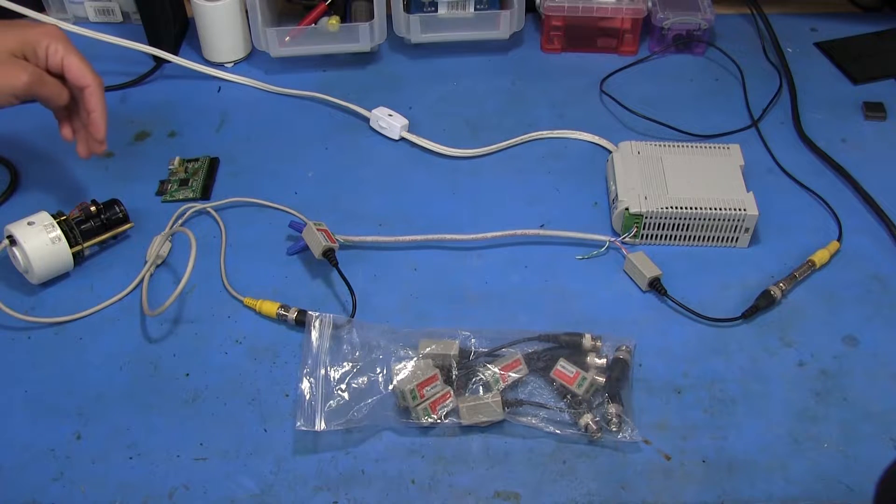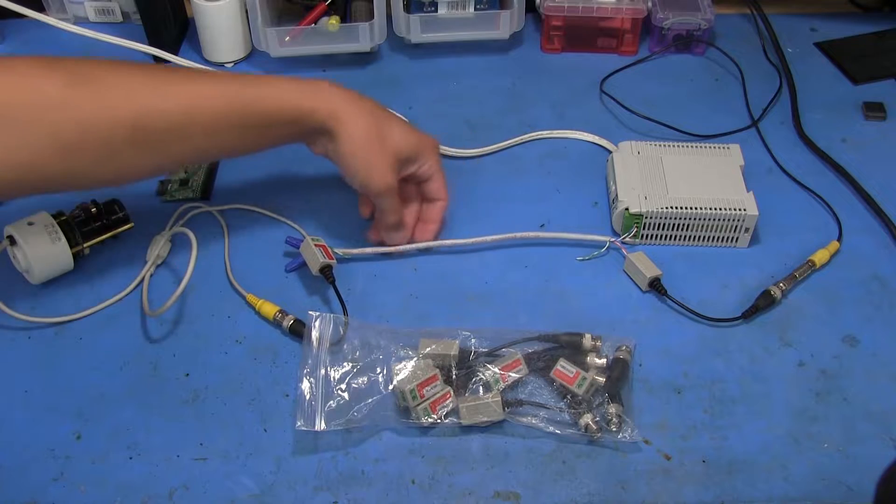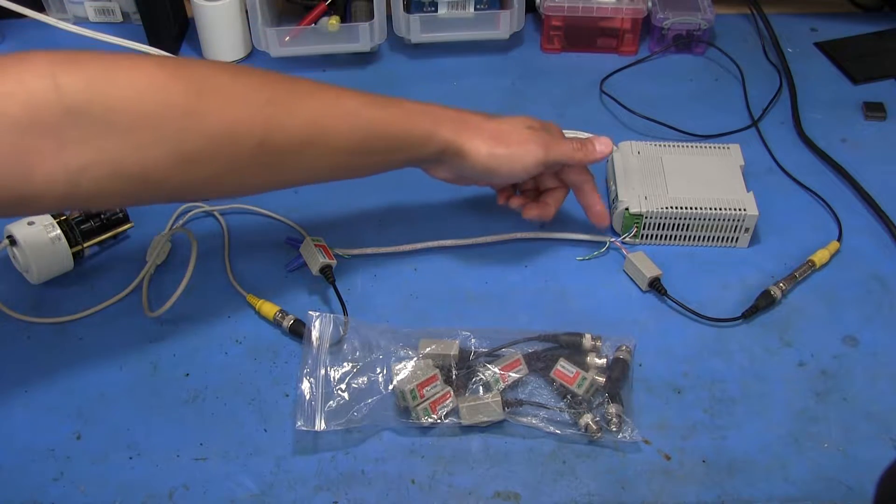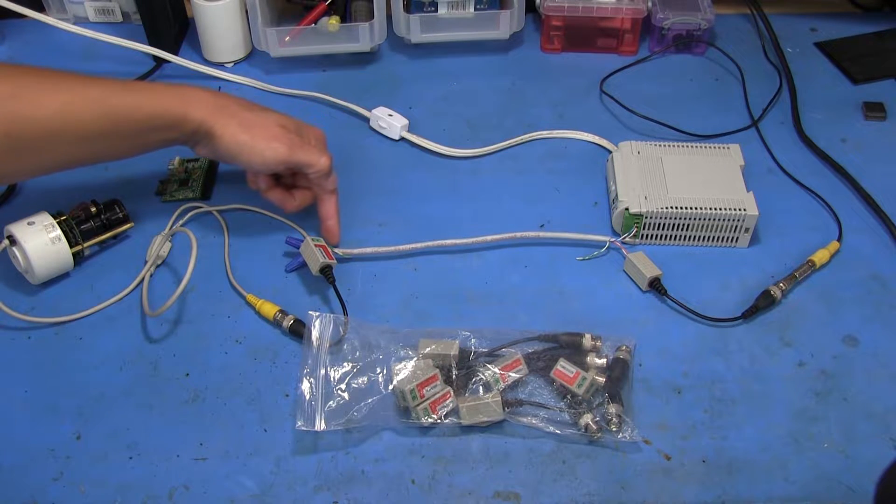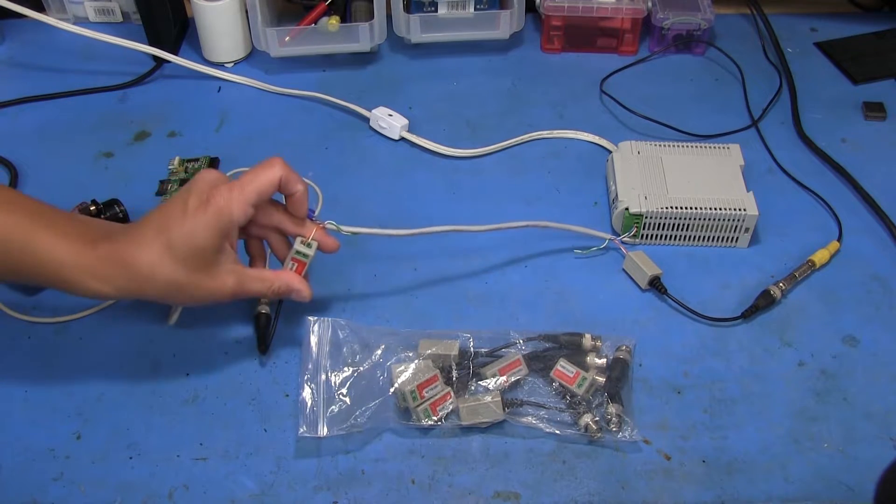...what you could do is use a piece of Cat5 like I've done here. This is just regular Cat5e. You can use a couple pairs to run your power over to the side where the camera is going to be, and then you would just hook up one of the other pairs.